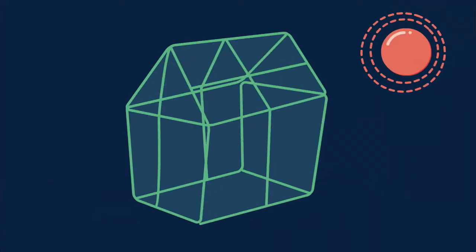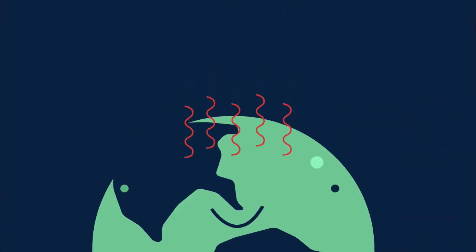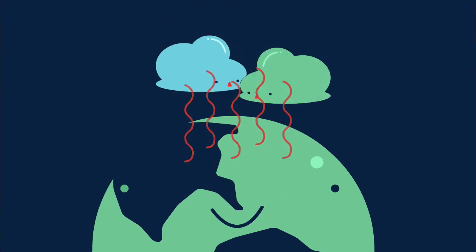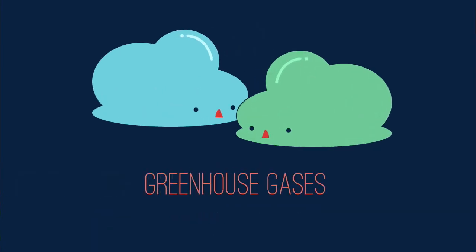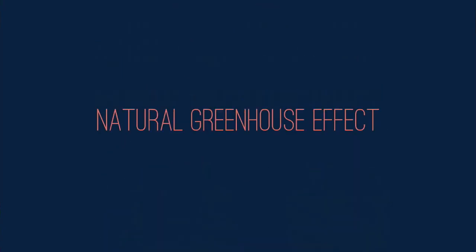A greenhouse in the sun with its windows closed works in a similar way. Visible light gets through the glass, heats the soil which glows giving off infrared heat, but this cannot get through the glass, so the heat builds up inside the greenhouse. So the atmosphere acts a bit like glass, letting visible light through to warm the earth, but some of the heat or infrared radiation now given off gets absorbed by certain gases in the atmosphere — and these are the gases we call greenhouse gases.